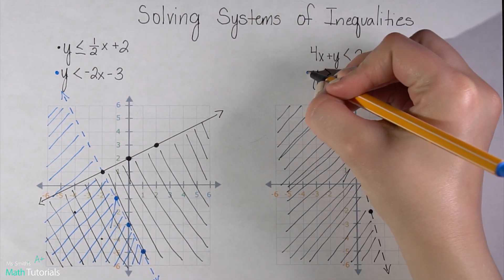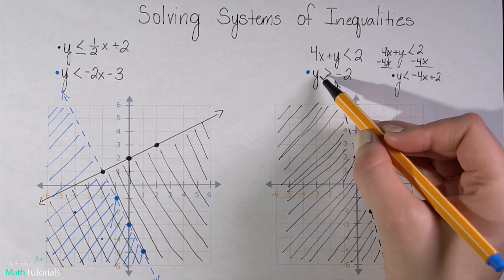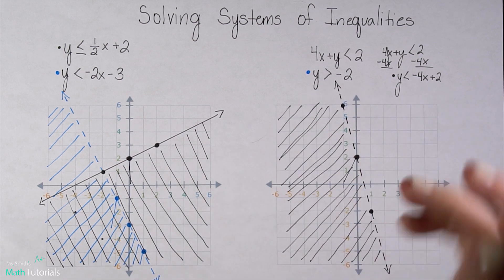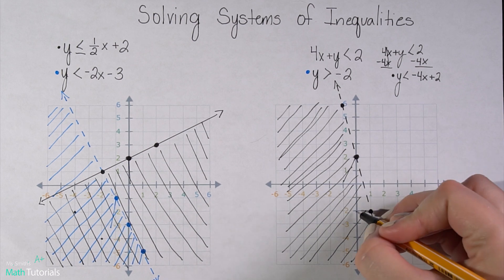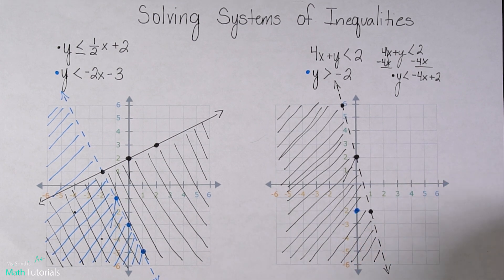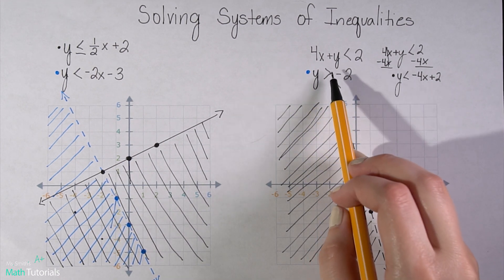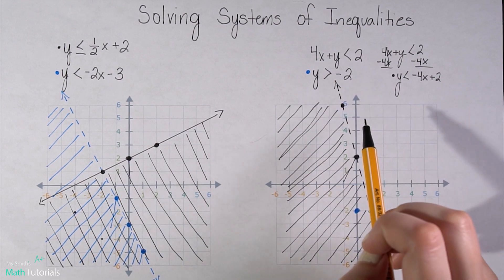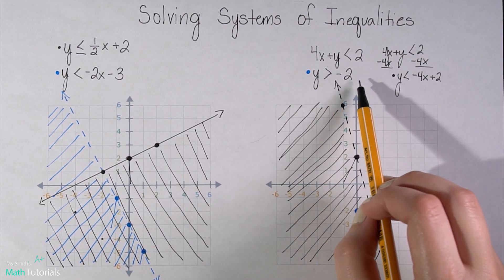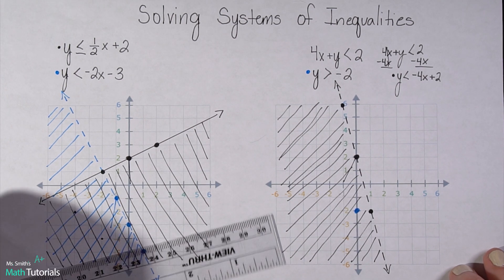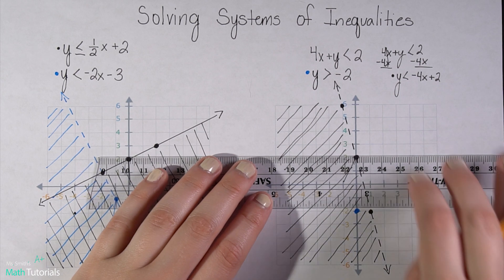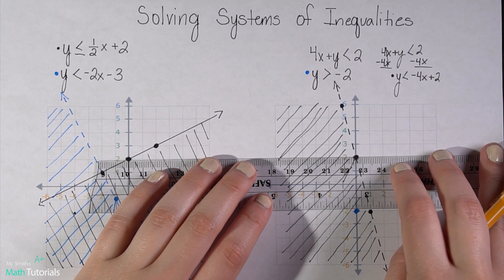Now, let's graph this second equation in blue. So all I've got here is y is greater than negative 2. So that means I'm going to plot on my y-axis, my first point at negative 2. And that tells me this is going to be a horizontal line. So anytime you have y equals a number, or y is greater than or less than a number, that tells you it's going to be a horizontal line. In the same way that if you had x equals a number, or x is greater than or less than a number, it'd be a vertical line.